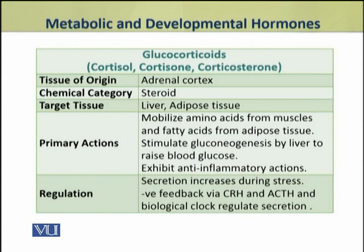Glucocorticoids — which include cortisol, cortisone and corticosterone — are produced from the adrenal cortex, and all three are steroid hormones. Their target tissues are liver and adipose tissue. Their primary actions are to mobilize amino acids from muscles and fatty acids from adipose tissue. They stimulate gluconeogenesis by the liver and as a result raise the blood glucose level. They also exhibit anti-inflammatory actions. Their secretion is increased during stress and is regulated by negative feedback through CRH and ACTH from the hypothalamus and pituitary, and also by a biological clock.